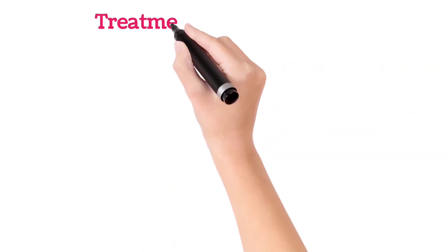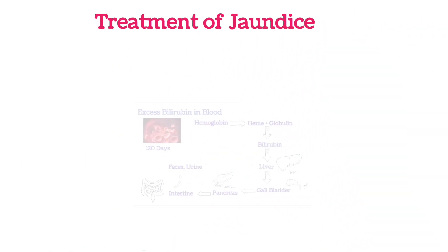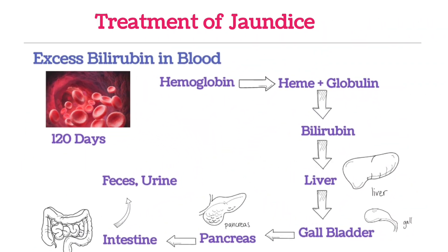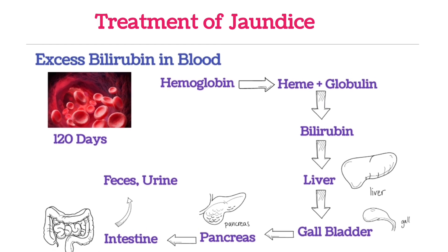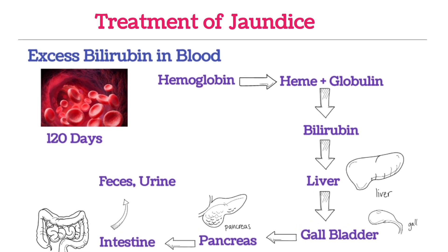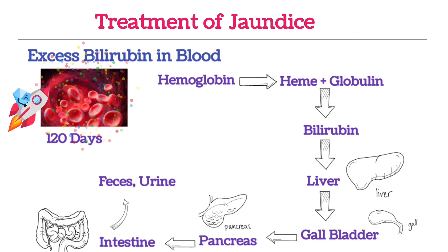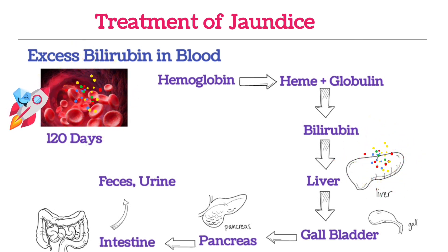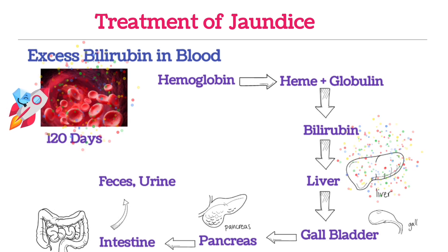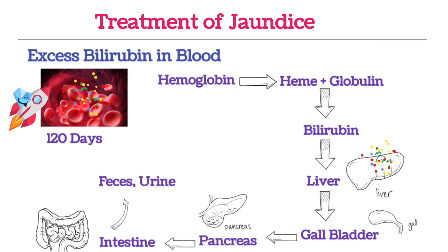Coming to the treatment of jaundice: jaundice treatment depends upon the underlying cause. If jaundice is caused because of excessive breakdown of red blood cells, the concerned treatment is required. If it is because of damage to the liver, what is the reason of the liver problem, then that treatment is required.